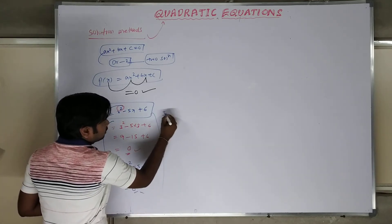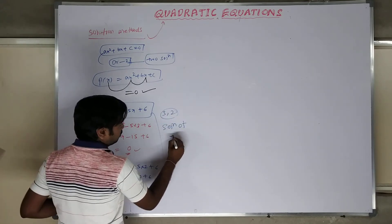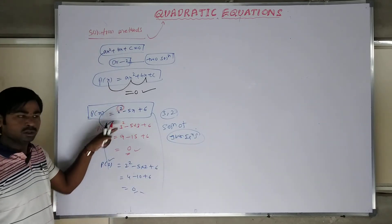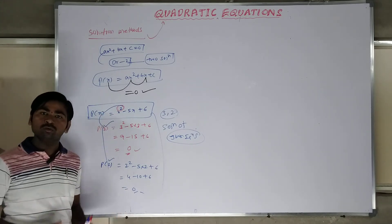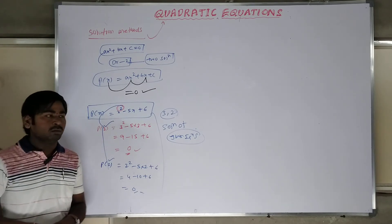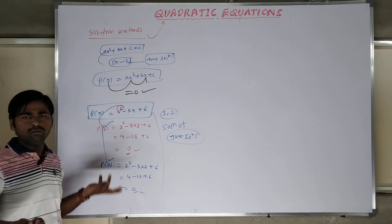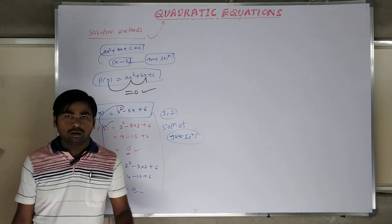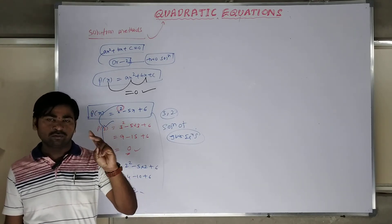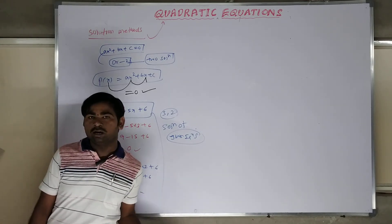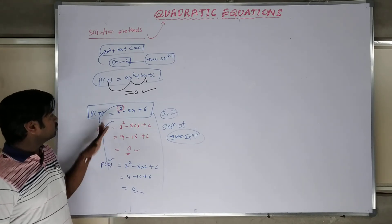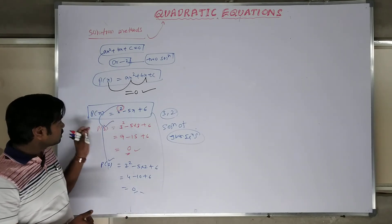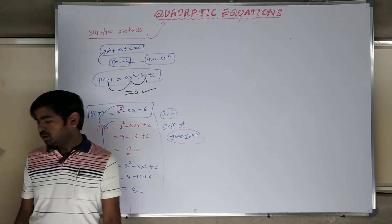So in this equation, 3 and 2 are the solutions of the given equation. How do we know? We substitute those values and the answer becomes 0. To find these values, we have a method. The quadratic equation consists of two solutions — for two values the equation becomes 0. To find these two values, we have a method. The solution means the value which we can substitute in the equation to make it become 0. That is the solution for the given equation.